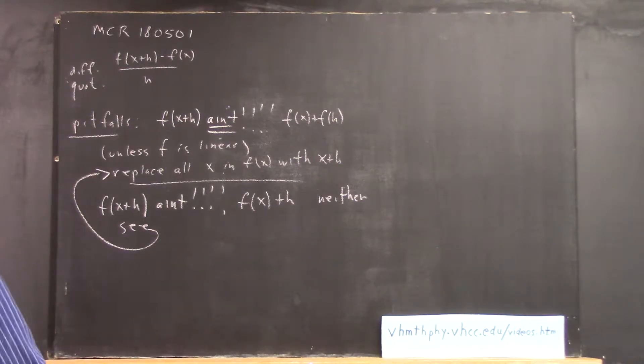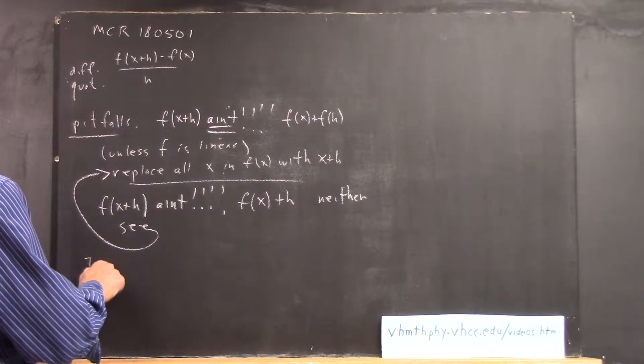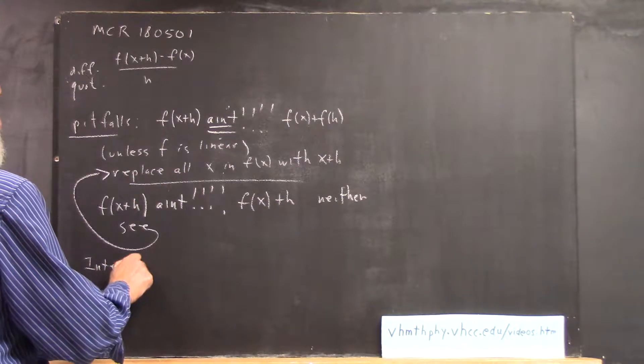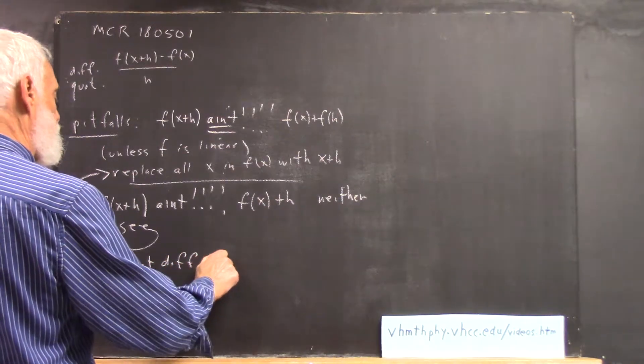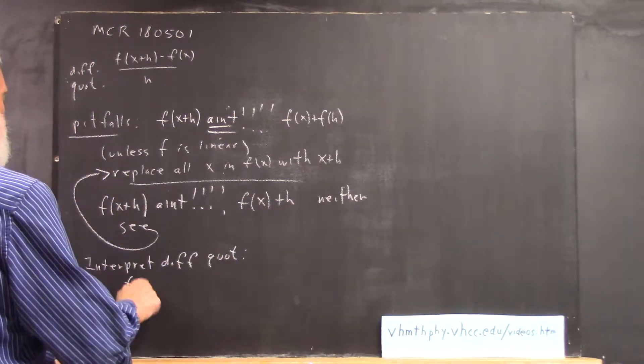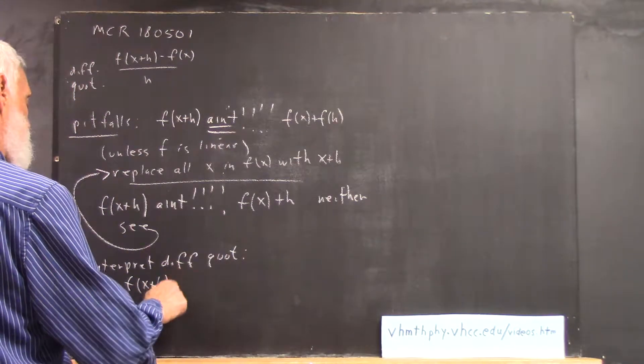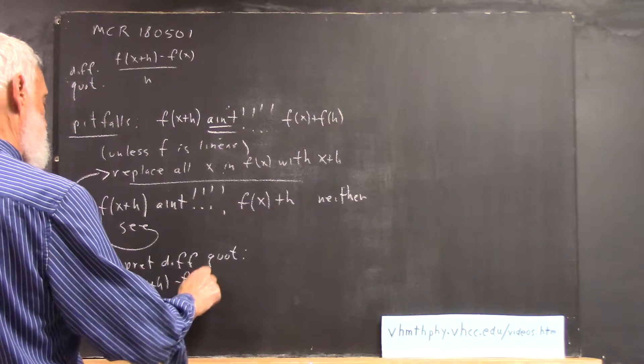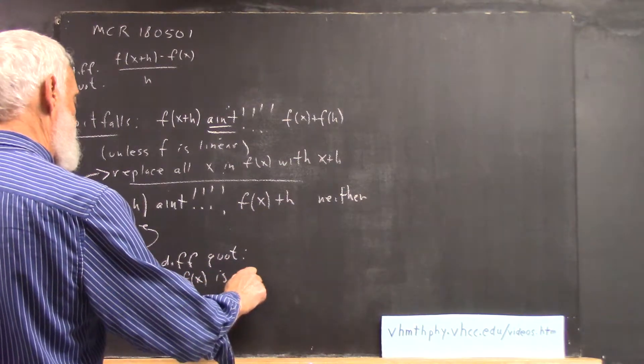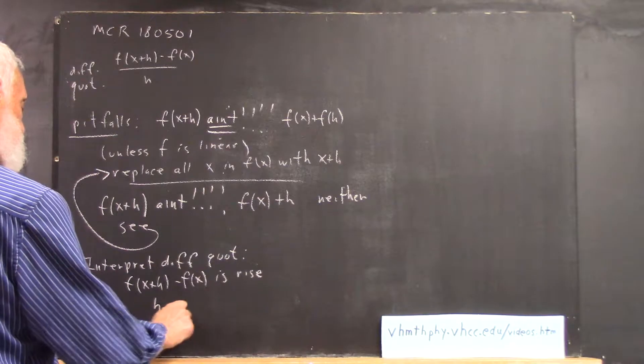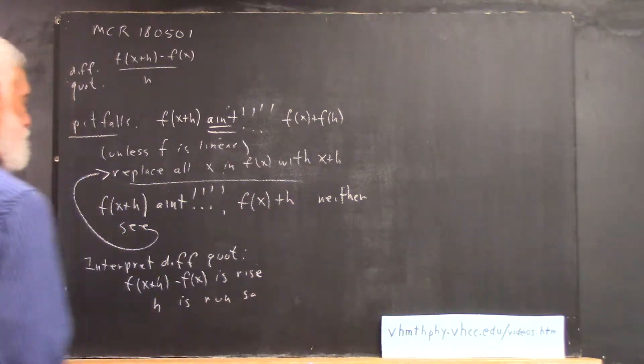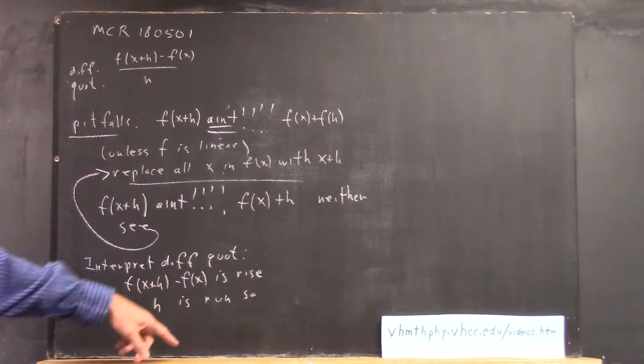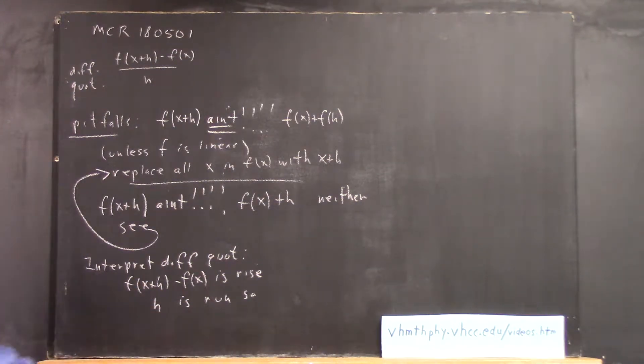Since we're on difference quotient, f(x+h) minus f(x) is the rise, h is the run. All I've got to do is draw a picture, and you see that.